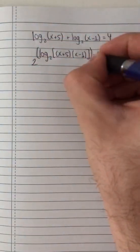To get rid of this logarithm, I'm going to take 2 raised to the power of all of this equals 2 raised to the power of all of this.